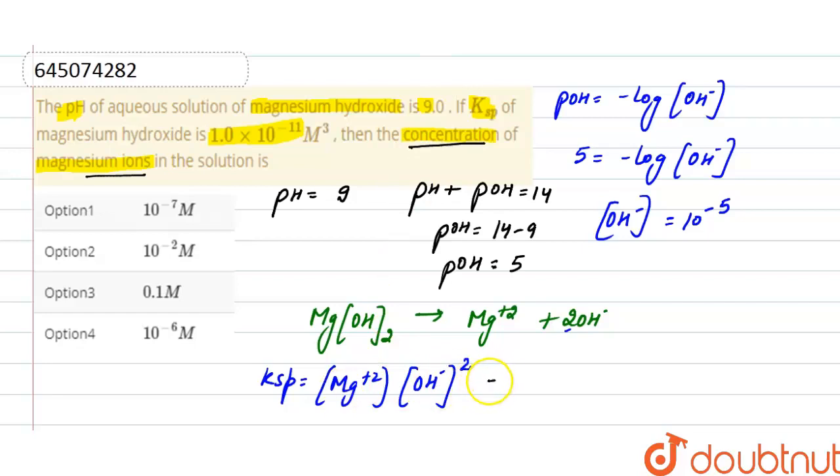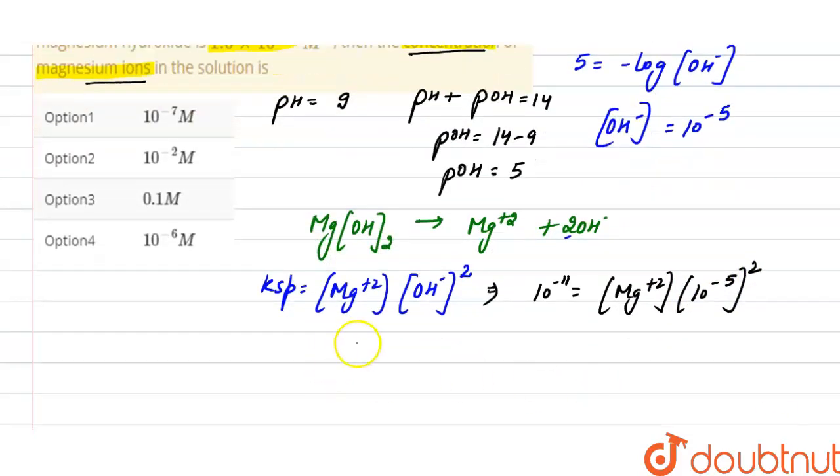Here Ksp is given. Ksp is 10 raised to the power minus 11. And we have to find out concentration of magnesium ion. And for OH ion, concentration is 10 raised to the power minus 5 raised to the power 2.